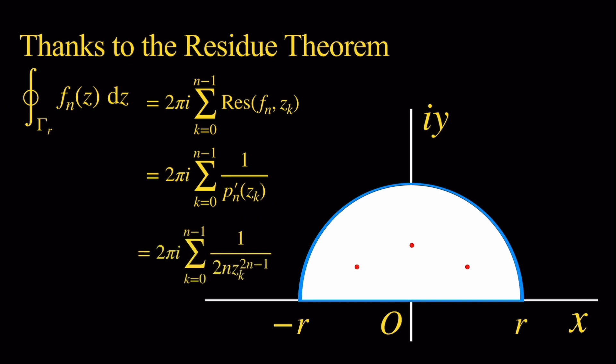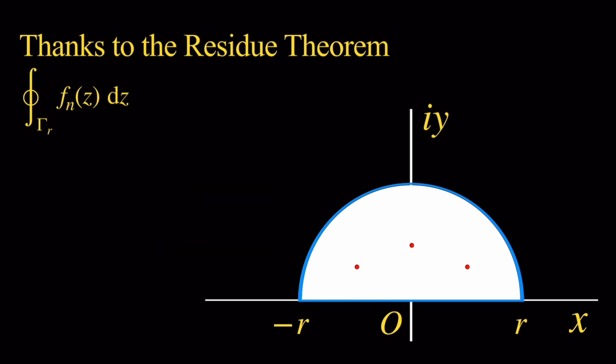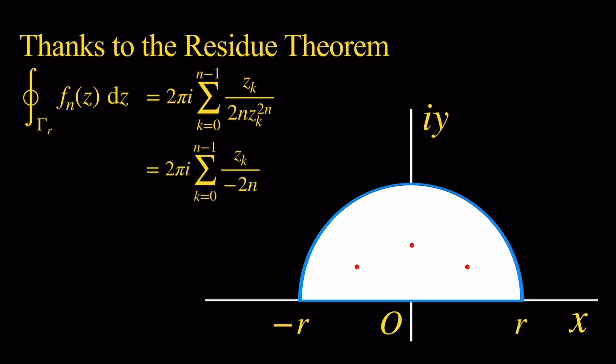We multiply the numerator and denominator by z sub k, because we know the value of z sub k to the 2n is equal to negative 1. In the denominator we now have z sub k to the 2n, which we replace by negative 1. The denominator no longer depends on k, so we can take it outside the sum and simplify. We end up with the integral along gamma r of f equal to negative pi i over n times the sum as k goes from 0 to n minus 1 of z sub k.